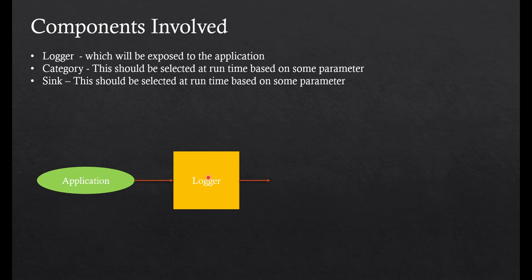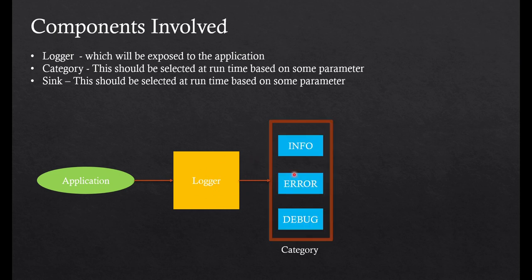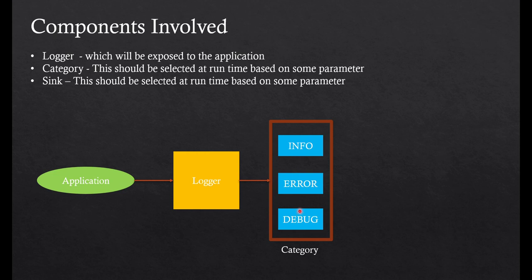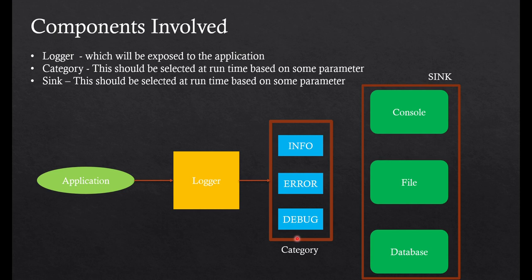At a high level, the application will use the Logger class to write logs. The Logger class will have features to distinguish different categories — info, error, debug — and we can add more like fine, finer for even more minute detail. These things should be coded so they are independent of each other. If I want to make a change or onboard a new category, it should not disturb the existing ones. The same goes for sinks — we should be able to add or remove a sink, and all these should be loosely coupled.